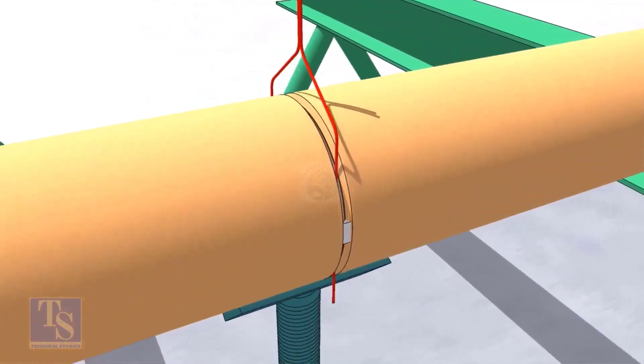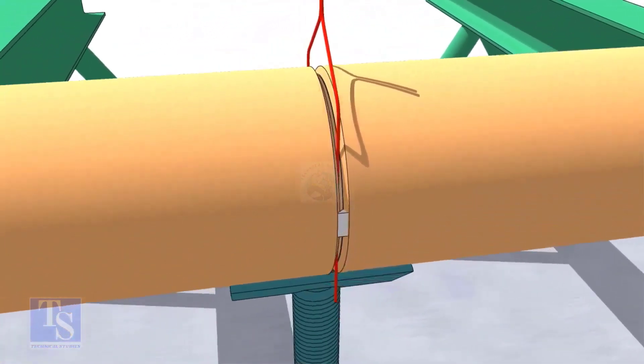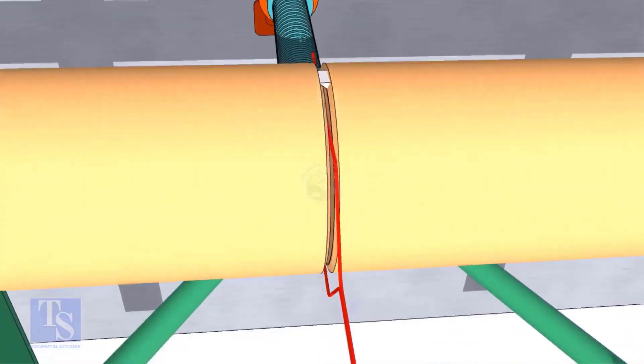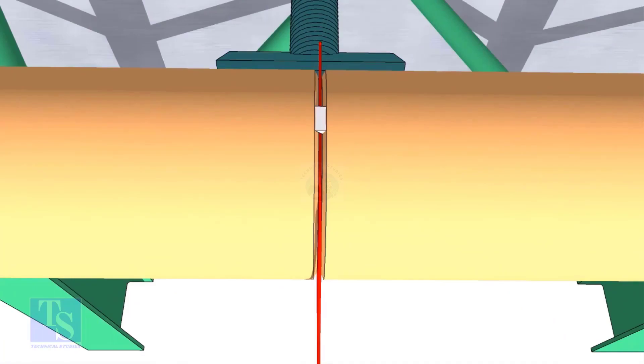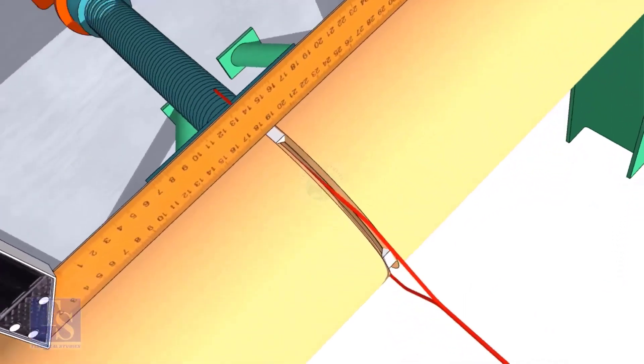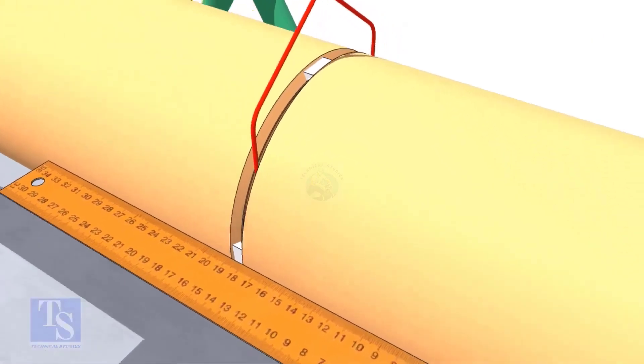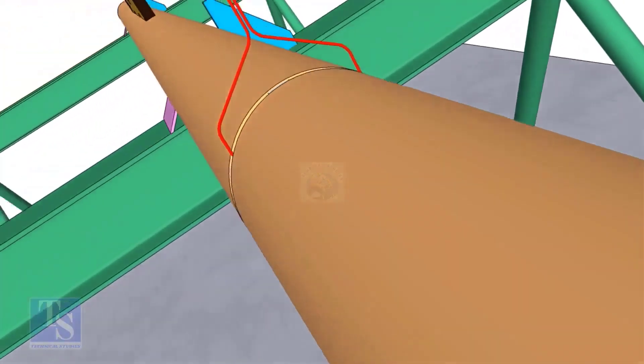Tack weld on both sides of the pipe. Then the top and bottom of the joint. Don't forget to cross-check the overlap.